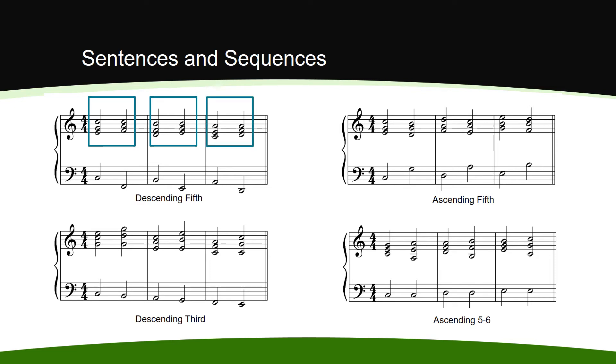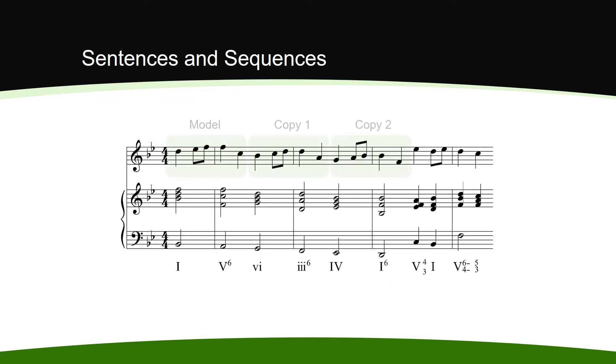Let's return to our example. We know that the melody contains a tonal sequence with one model and two copies. Let's look at the accompanying harmonic sequence. The Roman numeral analysis shows alternating root position and first inversion triads. The bass line is descending by step. So this is an example of a descending third sequence.